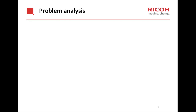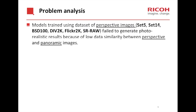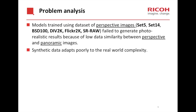So what's the problem? Public datasets such as Z5, Z14, BSD100, DIV2K, Flickr2K, and SR-RAW include perspective images, which have low data similarity to panoramic images. Models trained using perspective image datasets fail to generate photorealistic results. On the other hand, if we use synthetic data, the network only learns a degradation that is artificially introduced, not from the real world. Real world degradation includes not only down-sampling and Gaussian blur, but also optical defects such as lens distortion, chromatic aberration, and other noise components, which cannot be modeled directly.